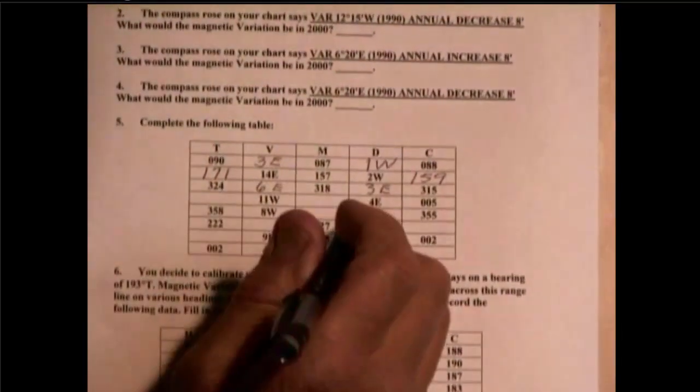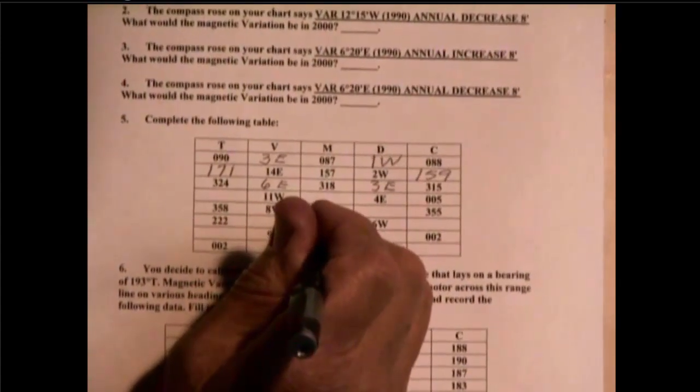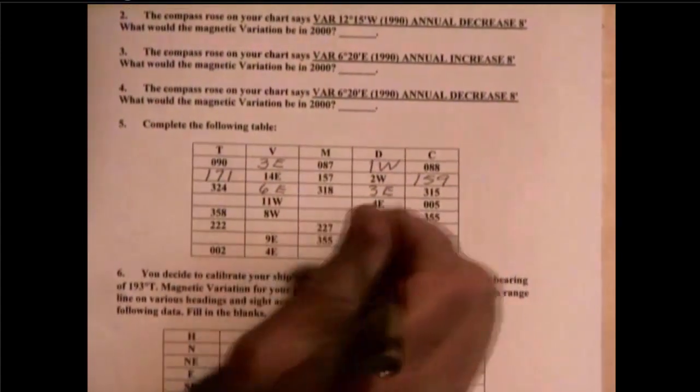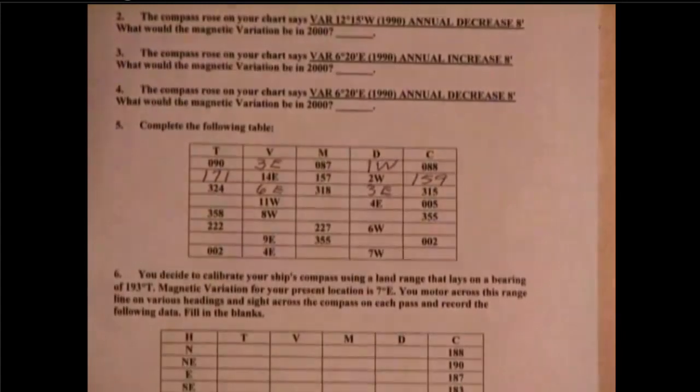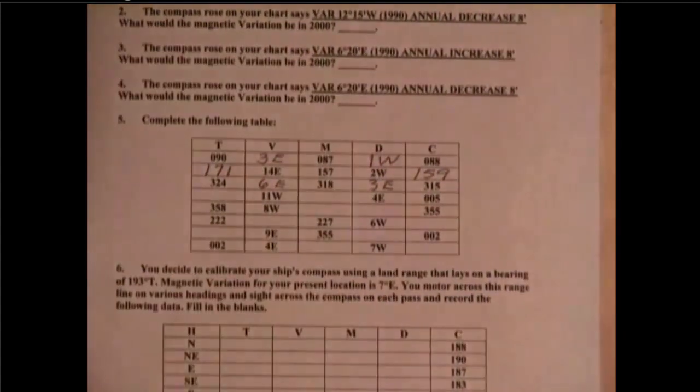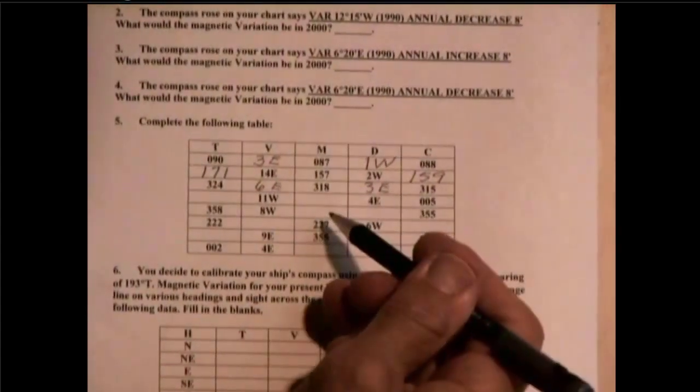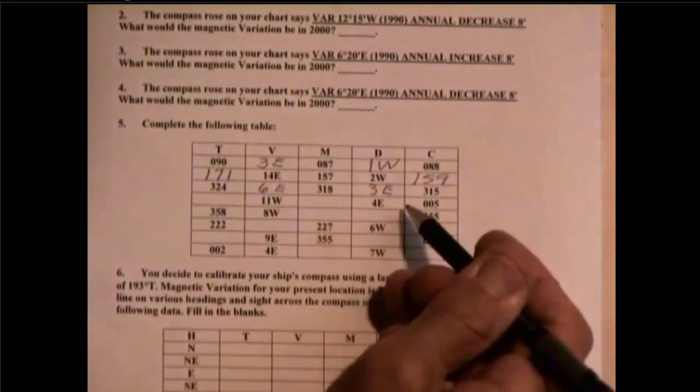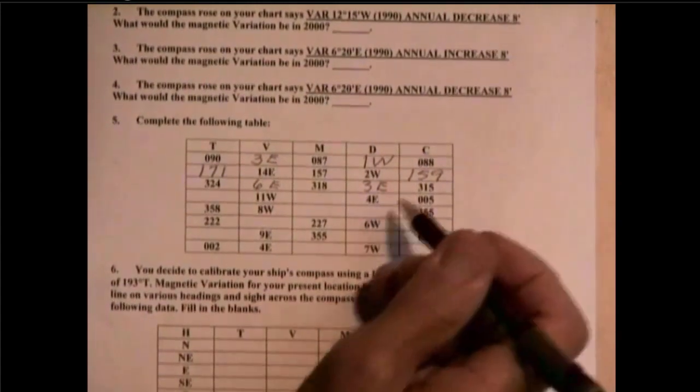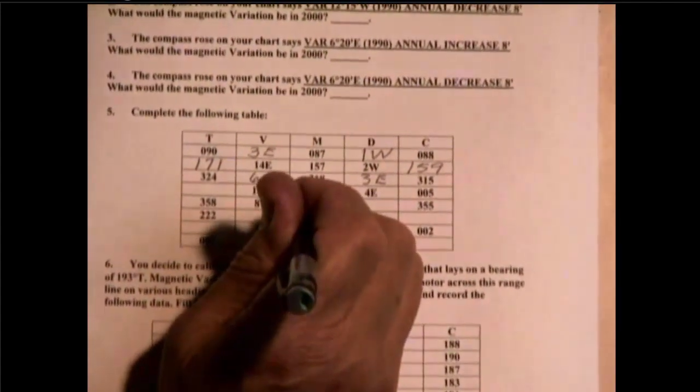Next slide. What would this one be? Now, working from here to here. I have 005 compass and I have 4 east. So, going from right to left with easterly is going to add. So, 005 plus 4 is going to be 009.